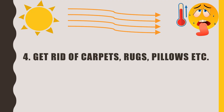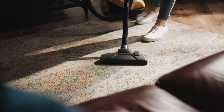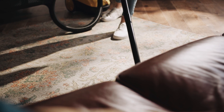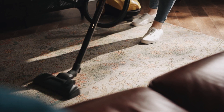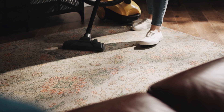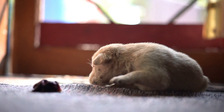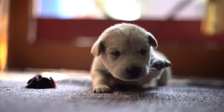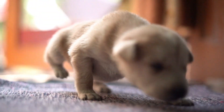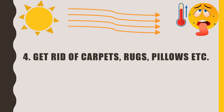Tip number four is to get rid of carpets, rugs, pillows, etc. To reduce temperature inside your house, you need to remove things that hold more dust, like carpets, rugs, and pillows. This will purify the air and lower the temperature. Carpets and rugs are suitable in cold weather because tiles and marble remain colder, and air circulating over them lowers the room temperature. Covering tiles or marble with carpet will cause room temperature to rise drastically.